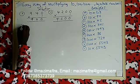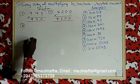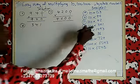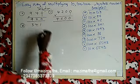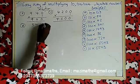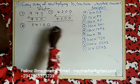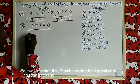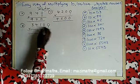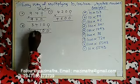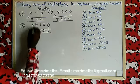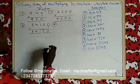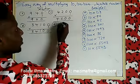Example D: 100 times 341. Write 341 first. How many zeros are in 100? Two — put those two zeros there. Then multiply: one times zero is zero, one times one is one, one times four is four, one times three is three. Your answer is 34100.